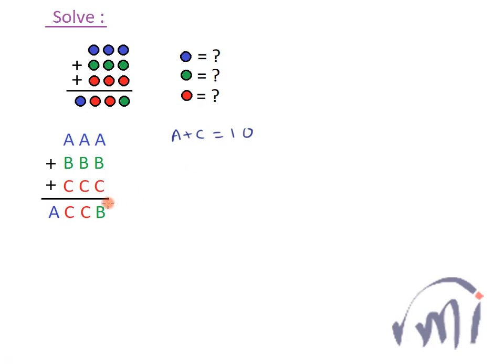So when A plus C is equal to 10, you are getting 1 as carried forward and when you add over here, you are getting a digit C as it is at tens place. That means when you add A, B and 1, you get a 10 or you can say A plus B is equal to 10 minus 1 that is equal to 9.